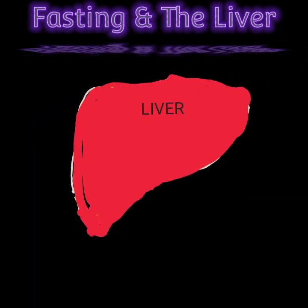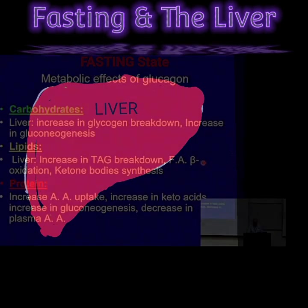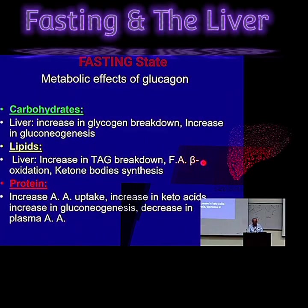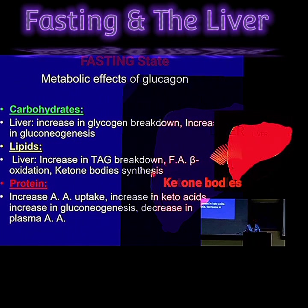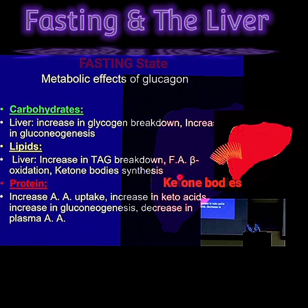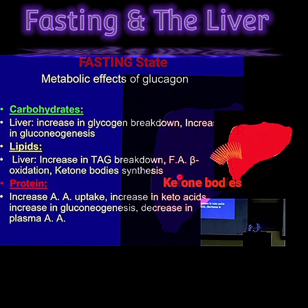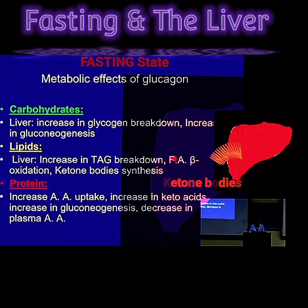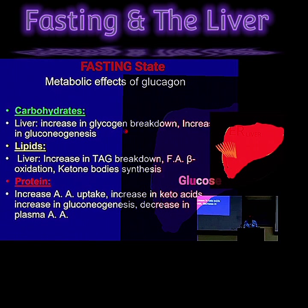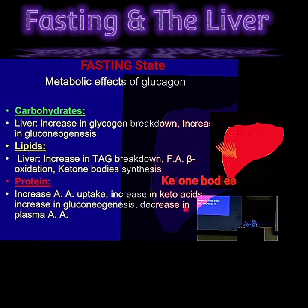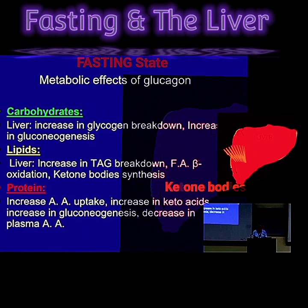In addition to increasing its glucose output, the liver will be increasing ketone body synthesis — ketogenesis — because it's using fatty acids as a source of energy, producing a lot of acetyl-CoA, and some of that acetyl-CoA is used in ketogenesis. Note how important the liver is: it's providing glucose and providing ketone bodies — two different forms of energy — to other tissues to use during fasting.